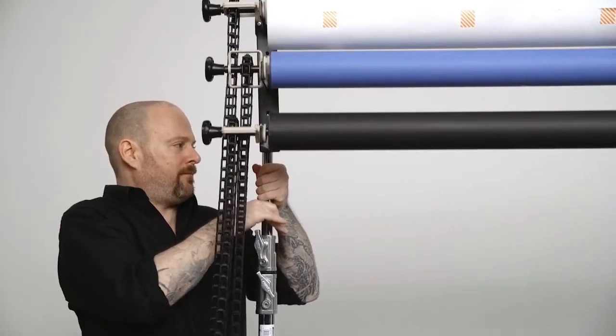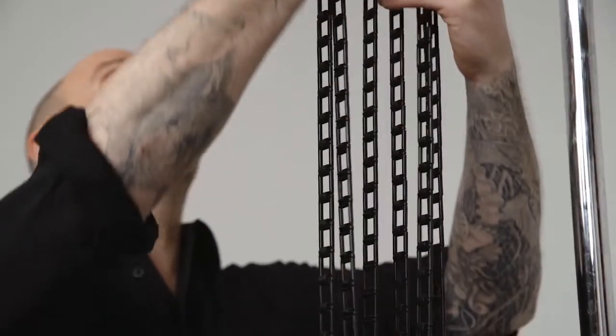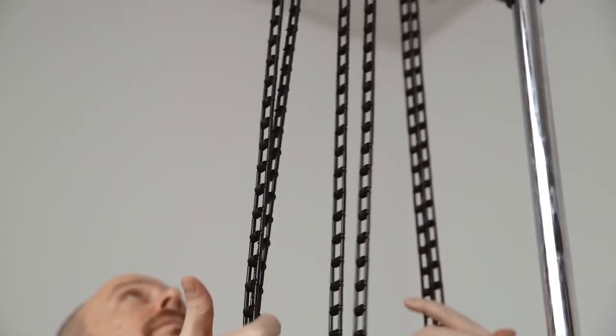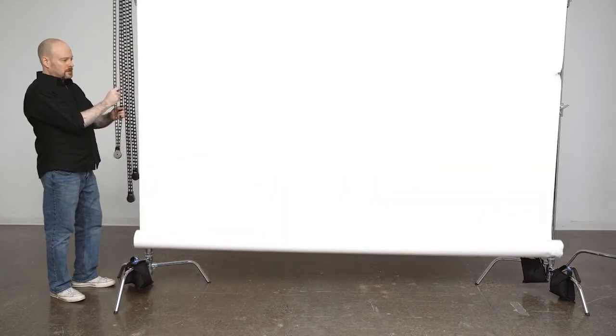Now cut the tape off the rolls and have an assistant help you raise the seamless to your desired height. Make sure all three chains hang freely and don't get caught up on the other drive units. Now simply use the chains to adjust the seamless rolls up or down to your desired height.